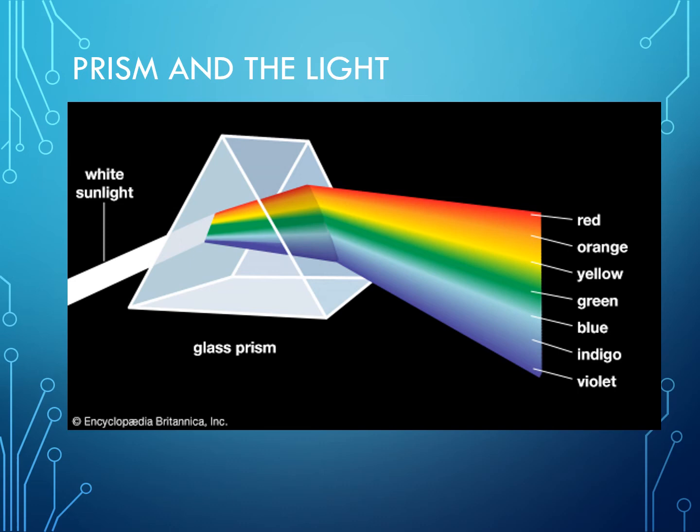If you're going to ask if black and white are considered colors, they are not. In science, they are considered to be shades. White is the presence of all the colors, while black is the absence of all colors.